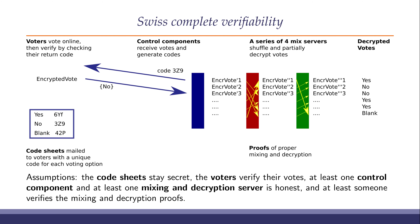The assumptions here are pretty obvious: we're assuming that the code sheets stay secret, that the voters check their codes, that at least one control component and at least one mixing and decryption server remains honest, and that at least someone verifies the mixing and decryption proofs. Those were supposed to be the assumptions. What we showed in this paper is that those assumptions were not sufficient to guarantee that the mixing servers had not altered the election outcome.